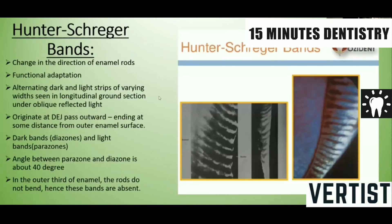Next is Hunter Schreger bands. These are alternate light and dark bands. The dark bands are called diazones and the light bands are called parazones. This appearance is due to the change in the direction of the enamel rods, and it is a functional adaptation. In longitudinal section, they are best visualized in ground section under oblique reflected light. The angle between the diazone and parazone is about 40 degrees. In the outer third of the enamel, the rods do not bend, and therefore these bands are absent in the outer third of the enamel.